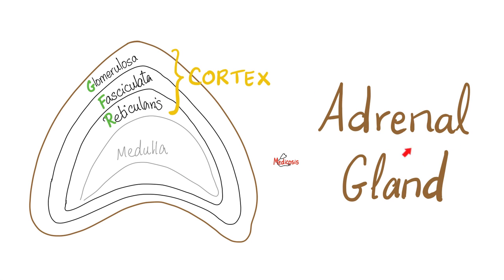Let's go. The adrenal gland has two layers: cortex and medulla. The cortex is subdivided into three sub-layers, each called a zona: zona glomerulosa, zona fasciculata, and zona reticularis. The zona glomerulosa secretes aldosterone. Zona fasciculata secretes cortisol. Zona reticularis secretes adrenal androgens.